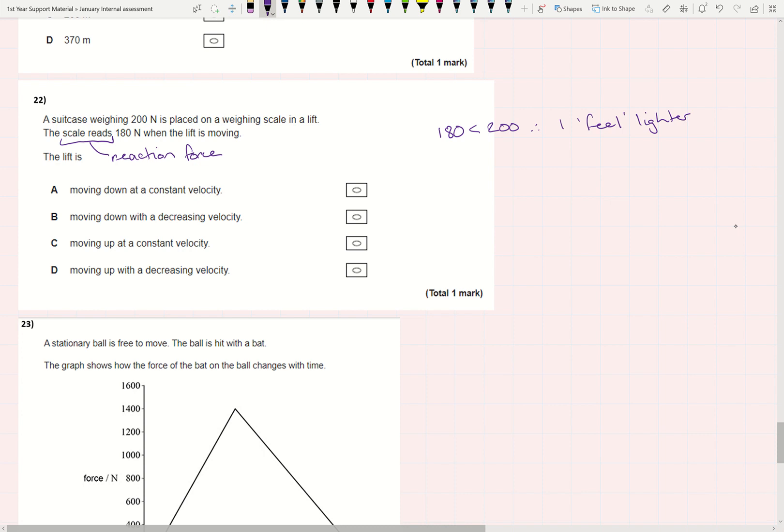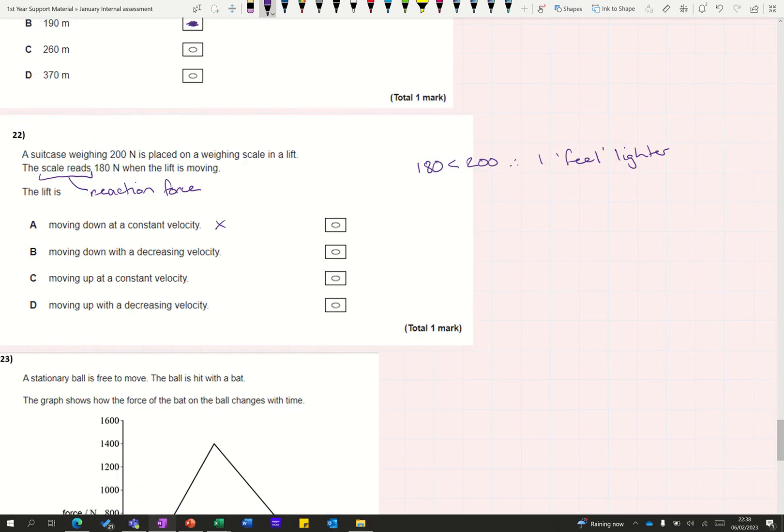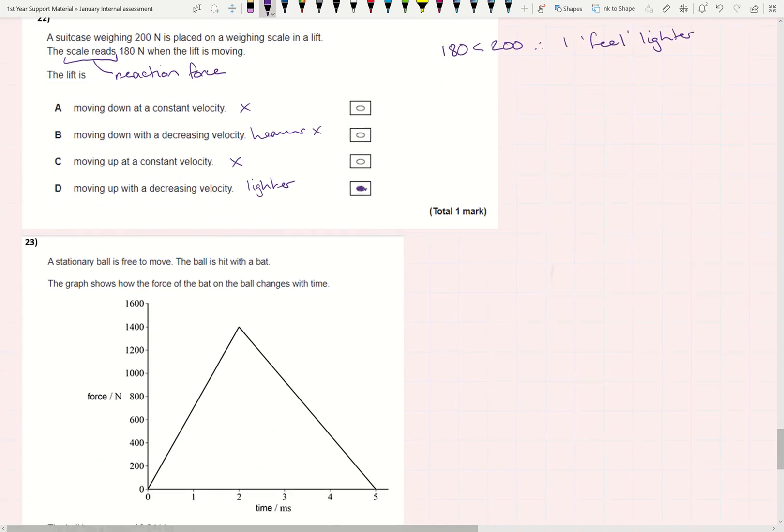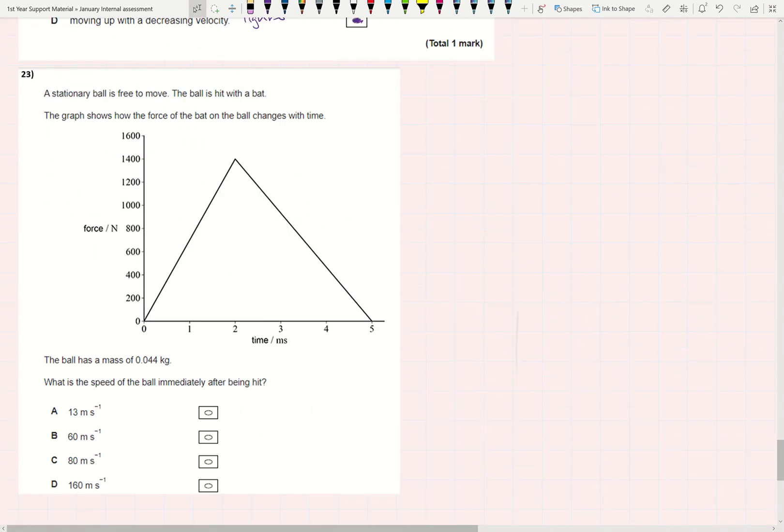If I'm moving at a constant velocity, then there's no resultant force, nothing happening to me, I feel normal weight. If I'm moving down and going slower, I feel heavier, so it's not that one. If I'm moving up at a constant velocity, then nothing changes. But if I'm moving up and slowing down, it's a little bit like going over a bridge in a car. You're moving up but slowing down. So it's going to be D. Possibly not a satisfactory explanation, but sometimes you just need to feel it.